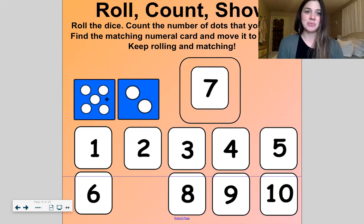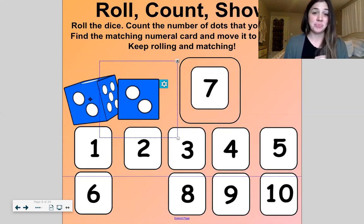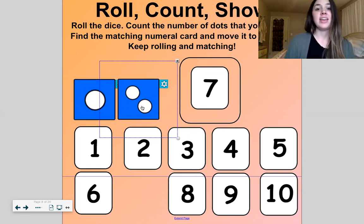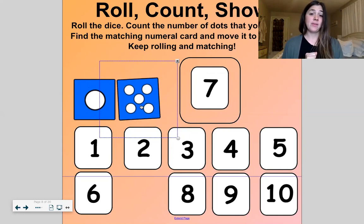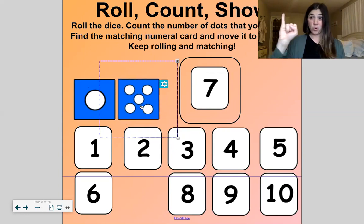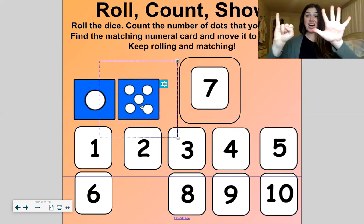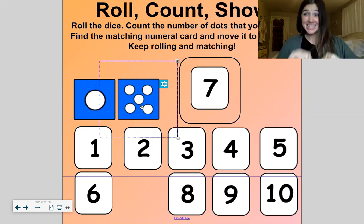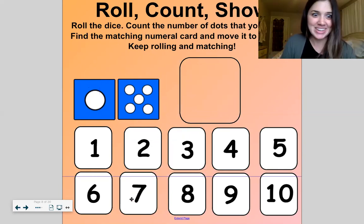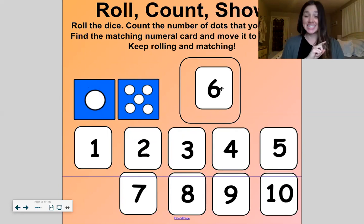All right, let's do it again. We'll do this two more times. Let's roll again. One and five. Five, one and five is six, bye bye seven, hello, six.